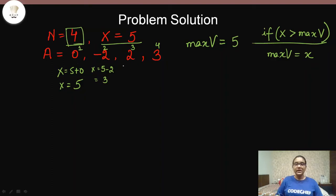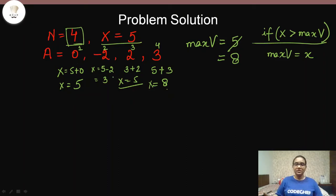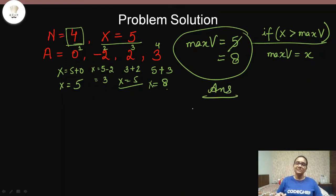At the third minute, x was 3 and we add 2, giving x equal to 5. This condition is again false since x is not greater than max_v. At the fourth minute, x is 5 and we add 3, giving x equal to 8. Now 8 is greater than max_v of 5, so we update max_v to 8. After all minutes, max_v equals 8, which is our answer.